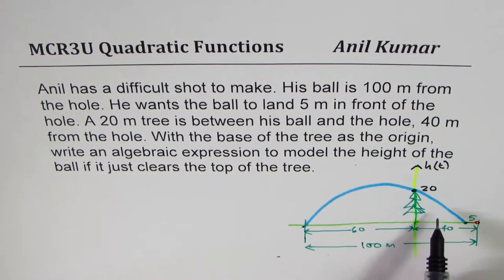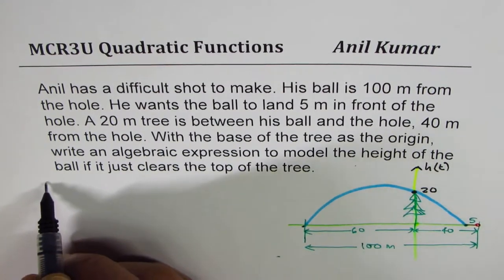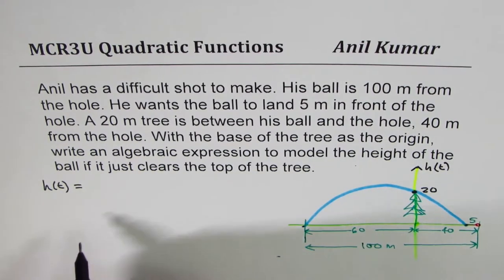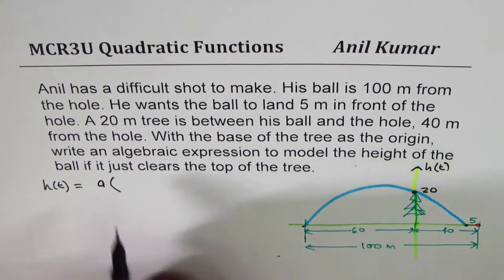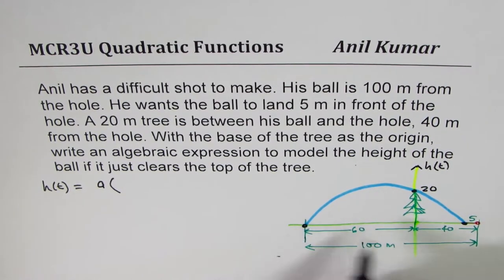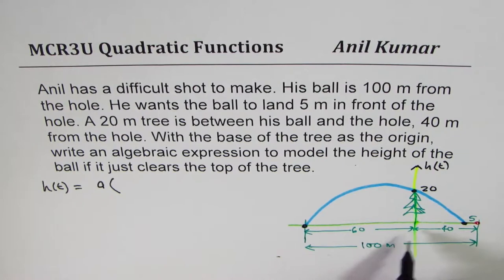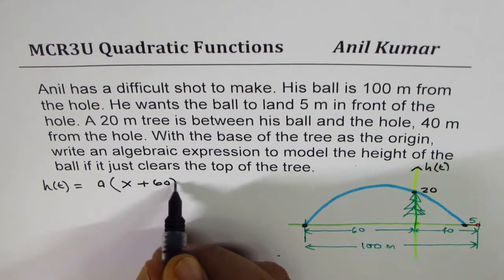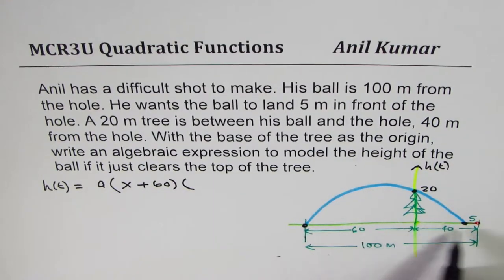How do we go about? So we can say that height of the ball in meters is equal to a times. If I consider these two as the x-intercepts, then the one x-intercept is 60 units to the left. That means x plus 60.